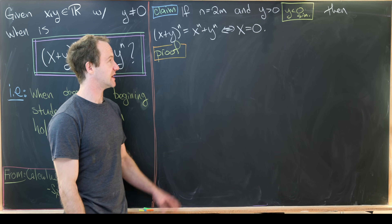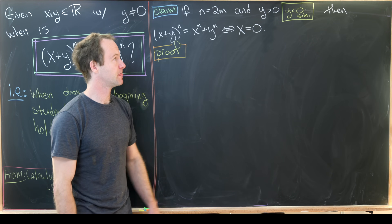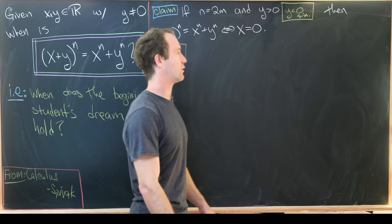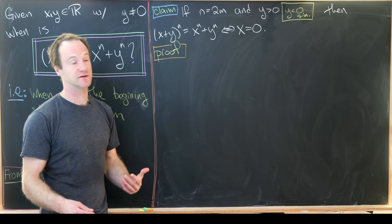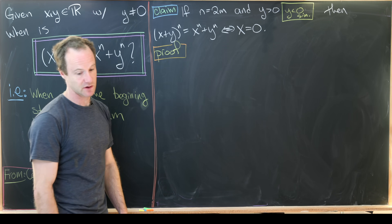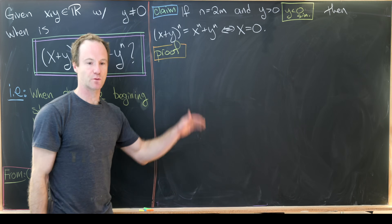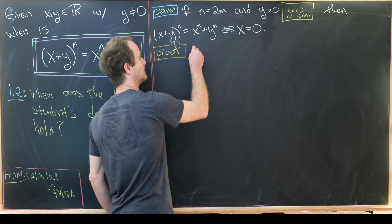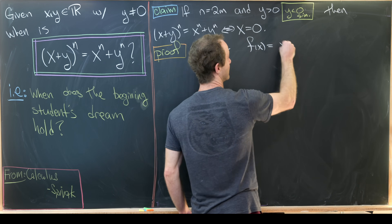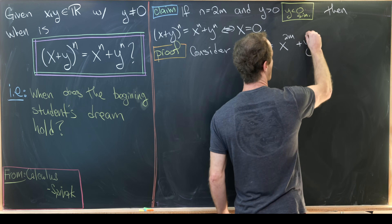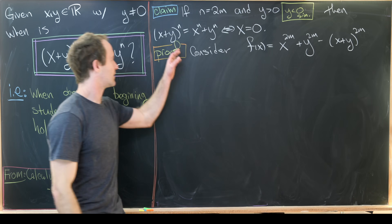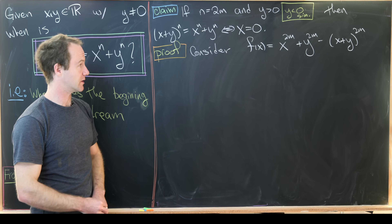Now we'll prove the even case. If n = 2m and y is non-zero — we'll handle y > 0 here; y < 0 is similar — then (x + y)^n = x^n + y^n if and only if x = 0. The reverse direction is clear, so we focus on the forward direction using calculus. Consider the function f(x) = x^{2m} + y^{2m} − (x + y)^{2m}.